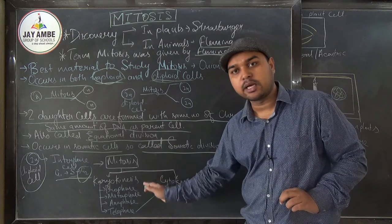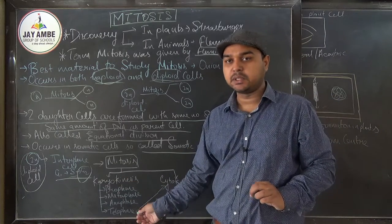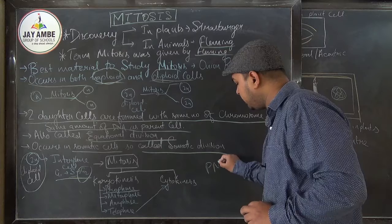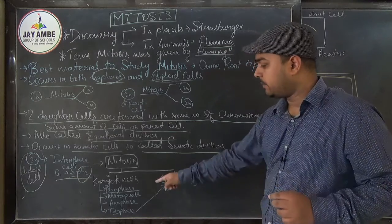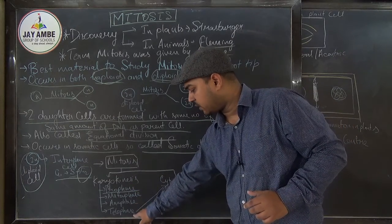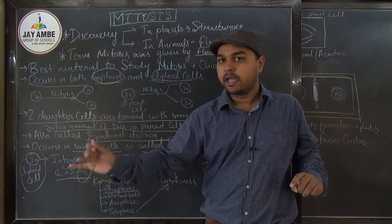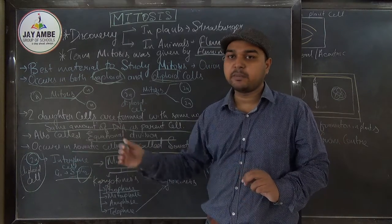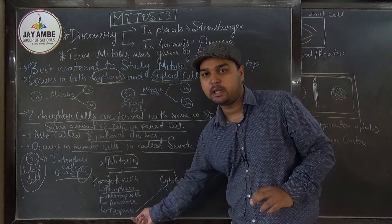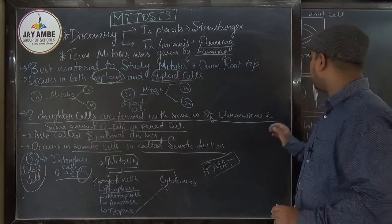After interphase, the cell enters M phase. M phase has two parts: karyokinesis, where nucleus division occurs, and cytokinesis, where cytoplasm division occurs. Karyokinesis further has four phases: prophase, metaphase, anaphase, and telophase — remembered by the mnemonic PMAT (like Pre-Medical Admission Test). So the order is: interphase (G1, S, G2), then M phase with karyokinesis (PMAT) followed by cytokinesis.